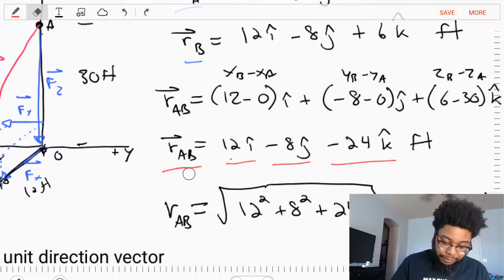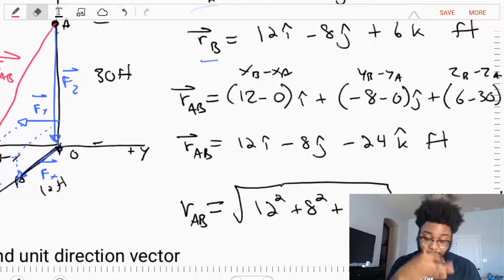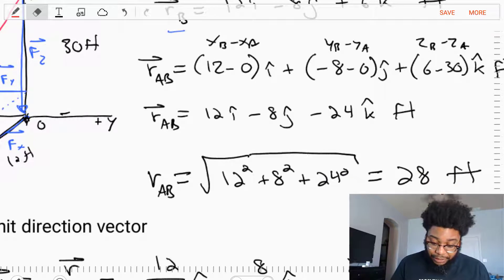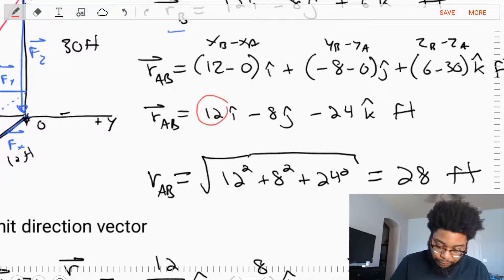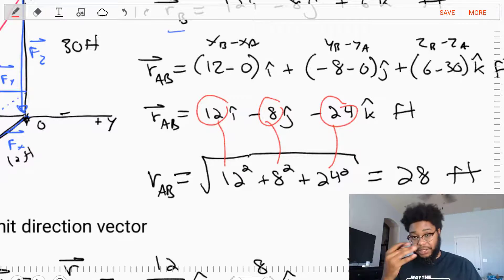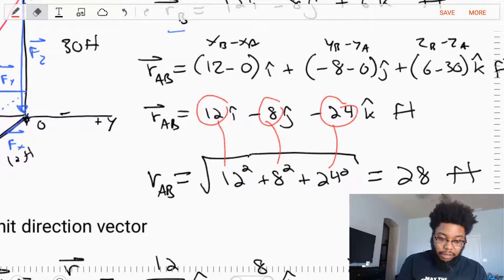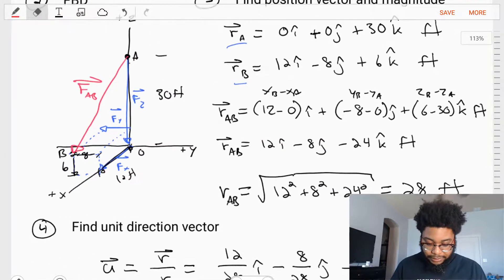And that position vector can also be turned into a length, if we want to find the distance between A and B, by simply taking the square root of the squared terms. So we take this 12 and square it, 8 and square, 24 and square it, find the square root of that, and the length vector is 28 feet.